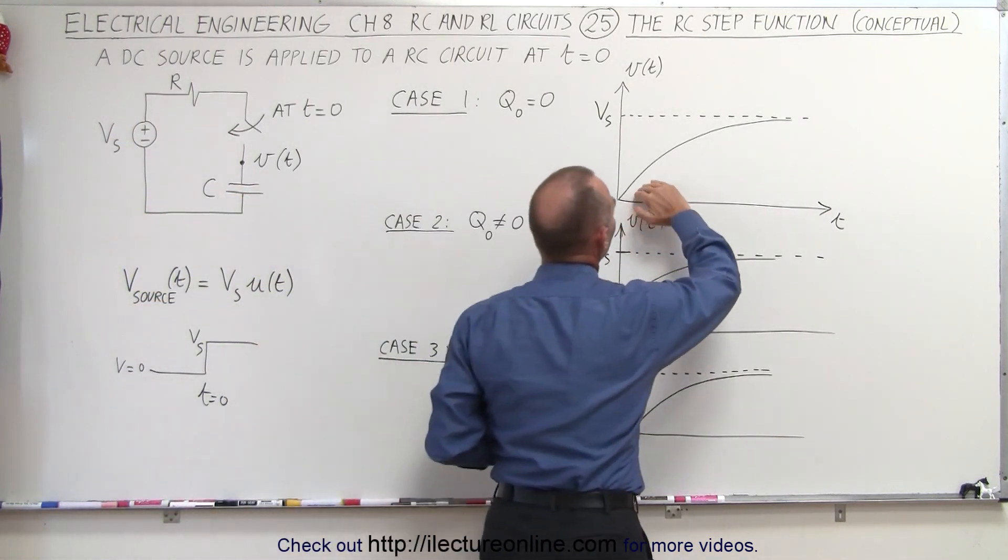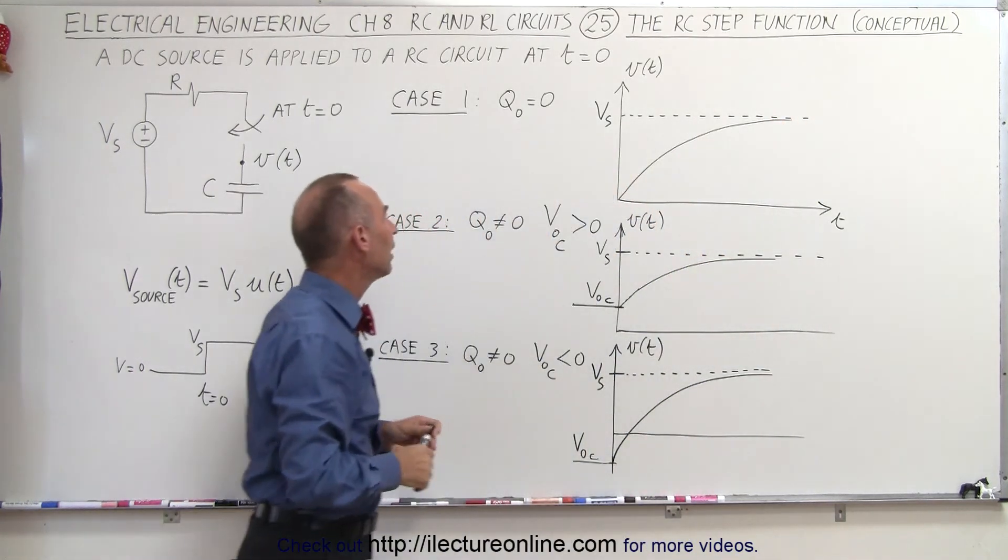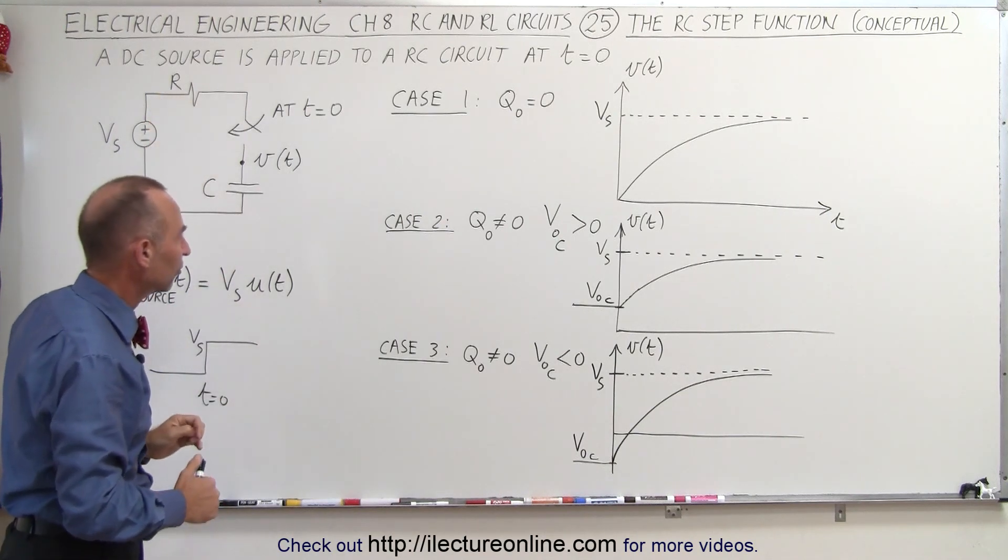and eventually after five time constants, the voltage across the capacitor will be nearly the same as the voltage across the source, and there'll be virtually no voltage drop across the resistor.